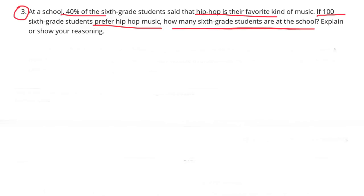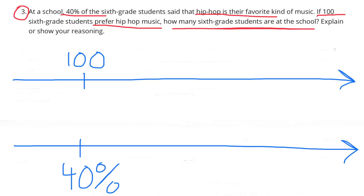Number 3. At a school, 40% of the 6th grade students said that hip-hop is their favorite kind of music. If 100 6th grade students prefer hip-hop music, how many 6th grade students are at the school? I started a double number line with 100 students on the top and 40% directly below it on the bottom. If we cut 40% in half we get 20%, and if we cut 100 in half we get 50. So we're counting by 50 students on the top and by 20% on the bottom.